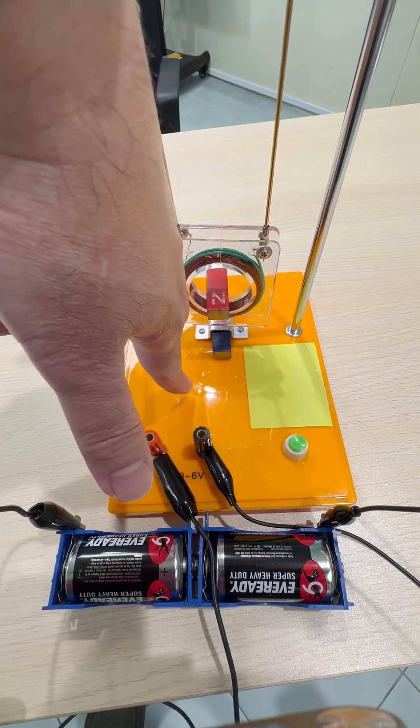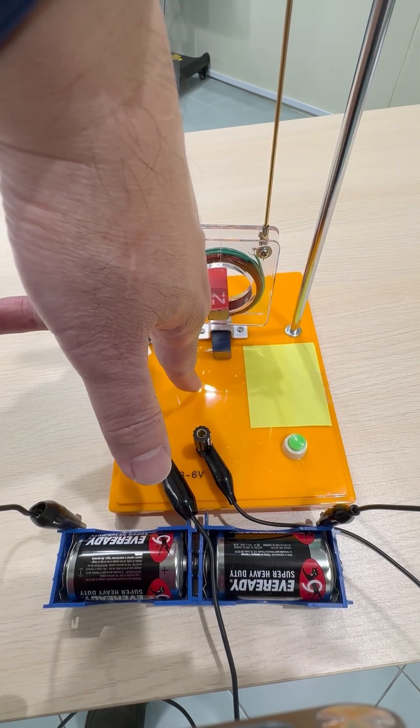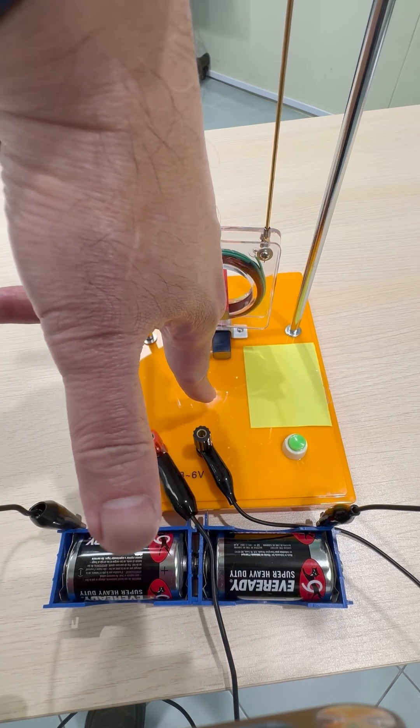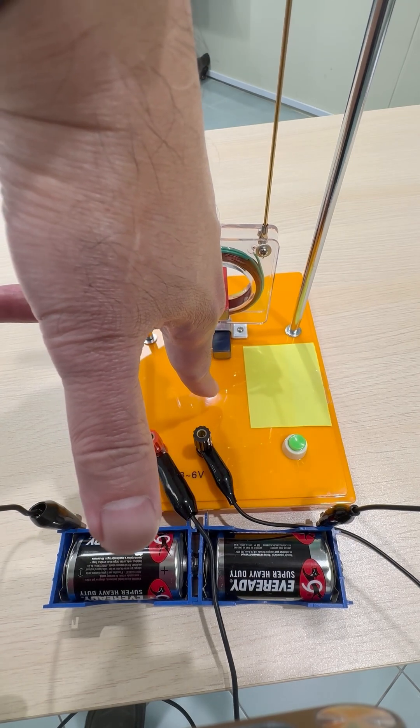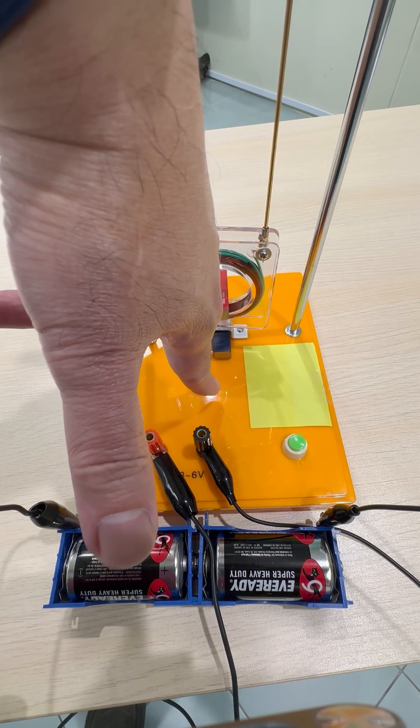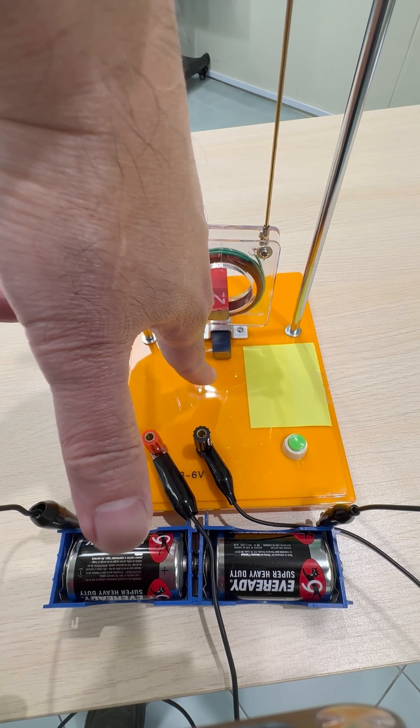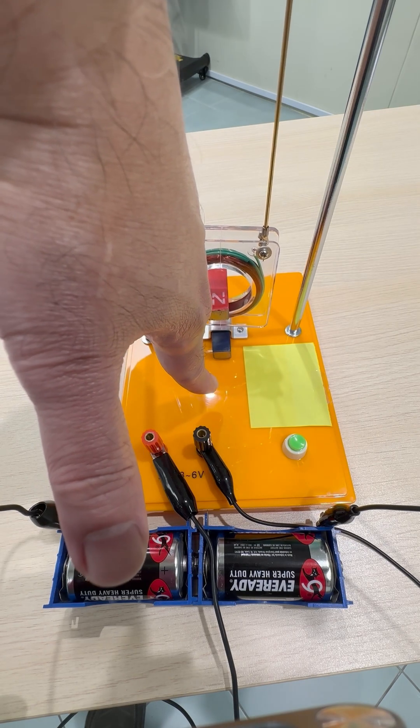The middle finger, which is the current, should be pointing to the left, and the force would be towards us, towards the camera. So we would see that coil move towards us.